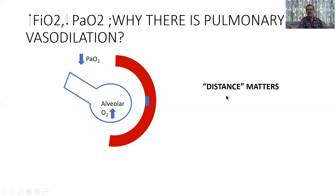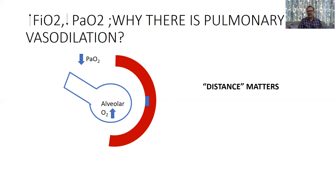Distance matters as far as this signaling is concerned. For example, if a junior person is present and one senior is sitting beside them while another senior is on the phone — one telling to intubate, one telling not to intubate — the junior person will listen to whoever is nearer and more easily accessible. Similarly, for the pre-capillary arteriole smooth muscle, the distance to the alveolar signal versus the arterial signal determines which command is obeyed.